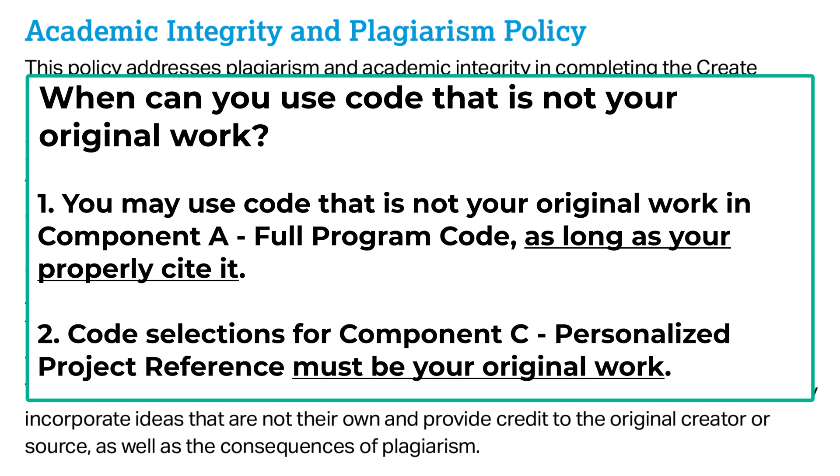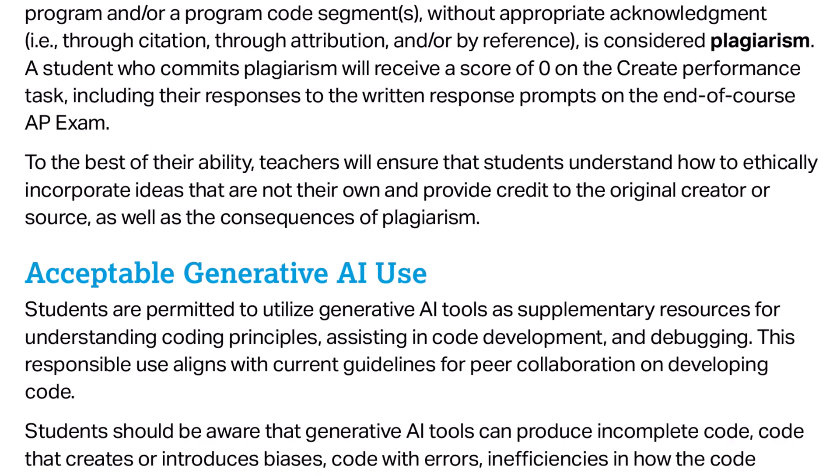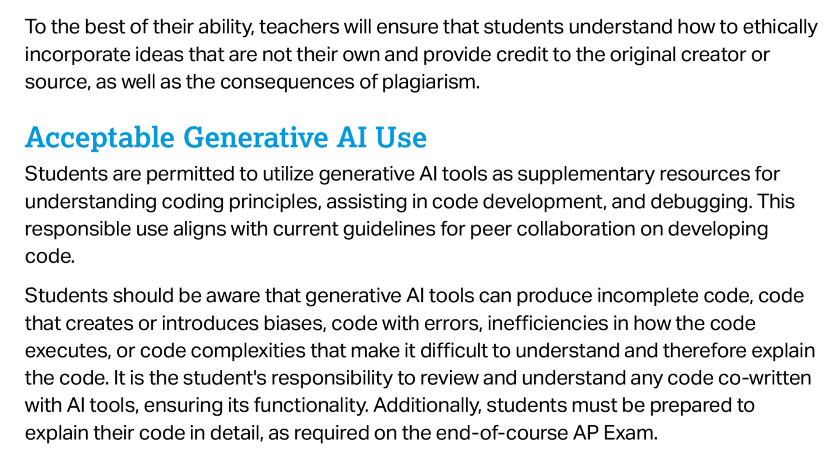Later on in your project, you will choose several selections of code from Component A and put it in Component C. The selections you choose for Component C must be your original work. Students may wonder under what circumstances the use of AI such as ChatGPT will cause code not to be considered your original work.